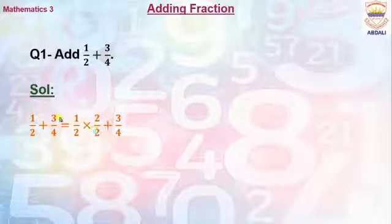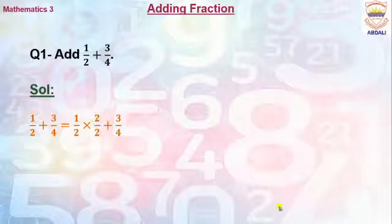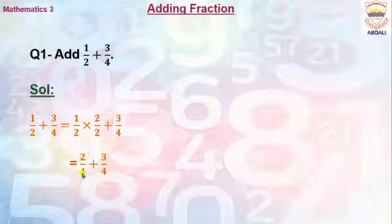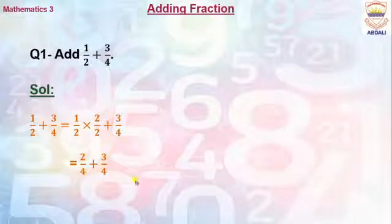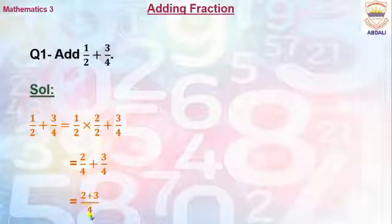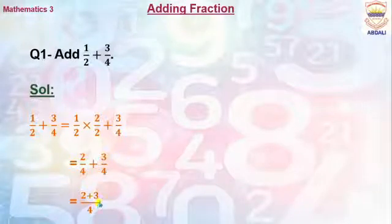It means we have multiplied 2 in both the numerator and the denominator. Plus 3/4 as it is. Now in the next step, 2 multiplied by 2 equals 4 in the denominator, so we get 2/4 plus 3/4. As we have completed our first step and our denominators are the same, we write the denominator one time and add the values of the numerator: 2 plus 3 equals 5/4.